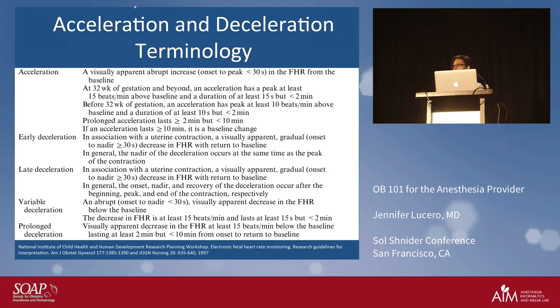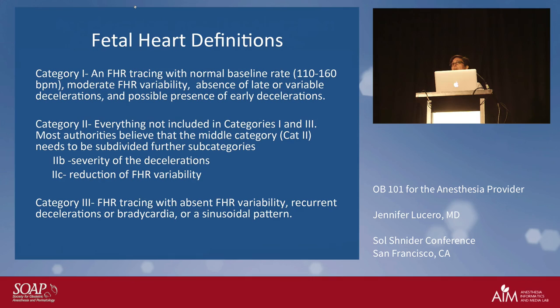Interpreting the tracings is the key challenge. The U.S. adopted a three-category system (Category I, II, III) while European groups use five categories. The problem is that almost everything ended up in Category II, leaving providers unsure what to do. The Category II group was subsequently broken into three subcategories, effectively creating five groups — but to avoid admitting defeat, we still call them Category I, II, and III with subgroups.